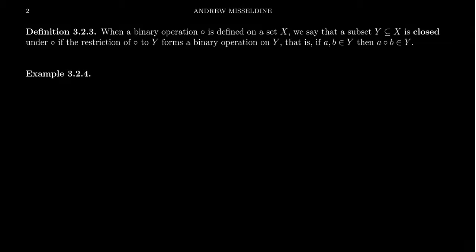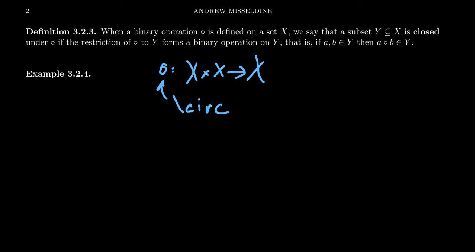In the previous video, we learned about binary operations. Related to the idea of a binary operation is the idea of closure. So let's imagine we have an operation on a set X. A circle here denotes an operation from X cross X to X. You can draw this circle in LaTeX by doing backslash CIRC, short for circle. So we have a binary operation on the set X with respect to the circle operation.